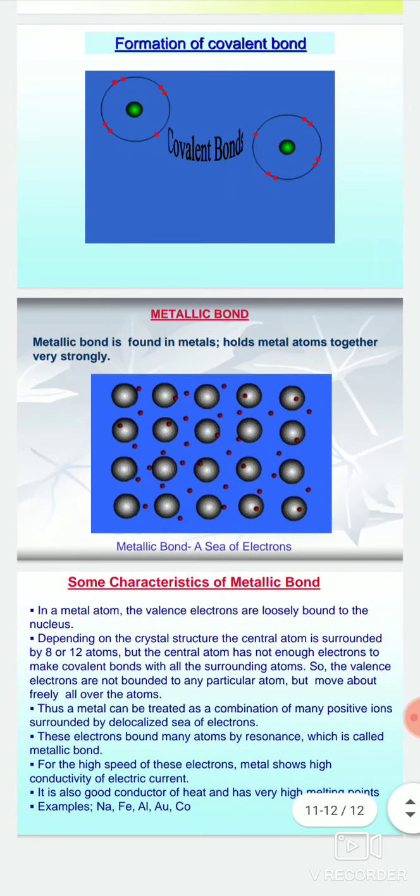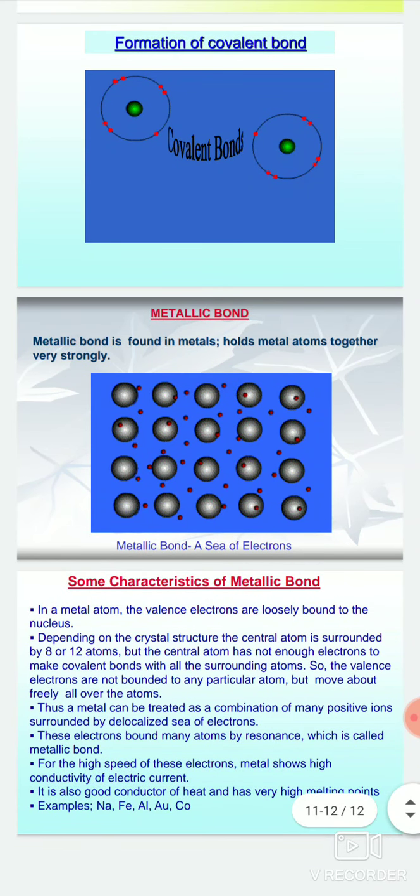Metal can be treated as a combination of many positive ions surrounded by a delocalized sea of electrons. These electrons bind many atoms by resonance, which is called metallic bonds.